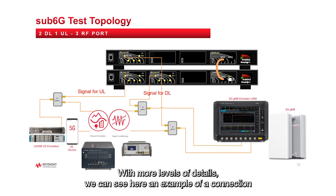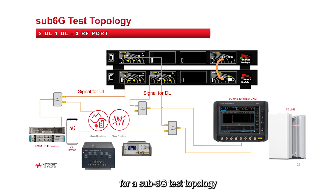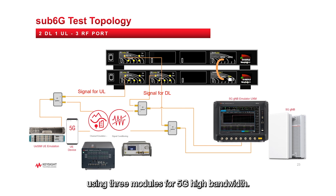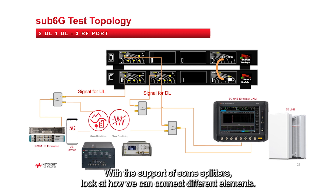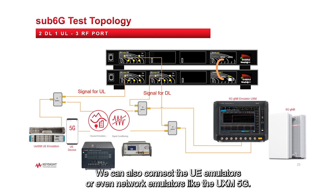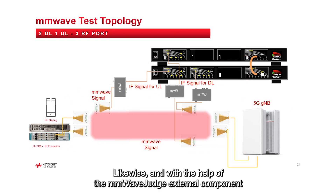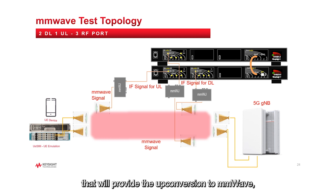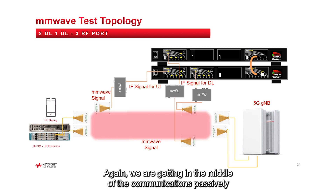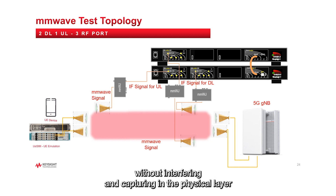With more level of detail, we can see an example of a connection for a sub-6 test topology, with the capability to test two downlink and one uplink transmission, using three modules for 5G high bandwidth. With the support of some splitters, we can connect different elements — even a channel emulator and a commercial device or commercial gNodeB, UE emulators, or network emulators like the UXM 5G. Likewise, with the mmWaveJazz external component providing up-conversion to mmWave, we have another test topology for high-frequency testing, passively getting in the middle of communications and capturing the physical layer, then correlating with the upper layers.